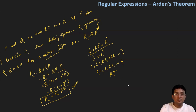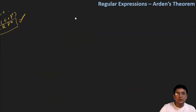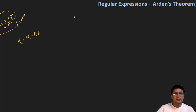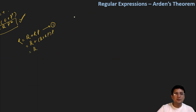Now let us prove the second part: that the solution is unique. Write the equation r = q + rp. In this equation, wherever there is r, replace it with q + rp. So we get r = q + (q + rp)p, which becomes q + qp + rp².